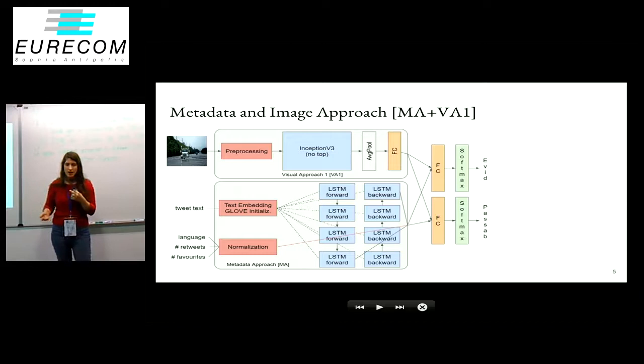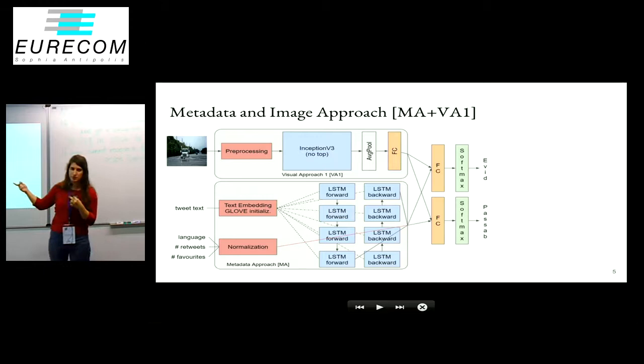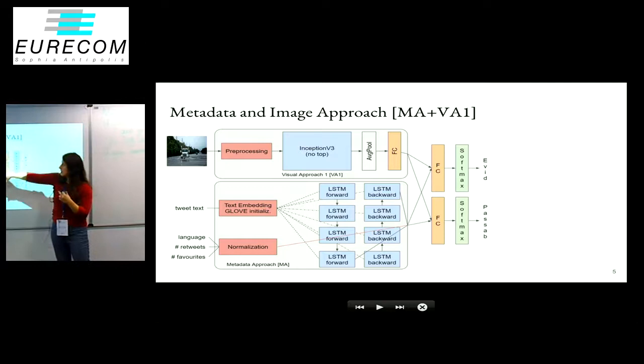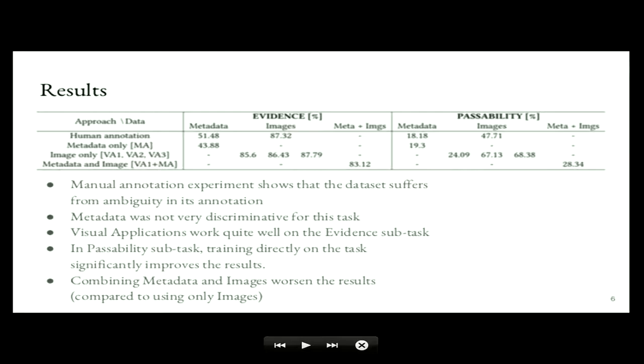Finally, for using the metadata with the visual information, we took the first approach that we used for the metadata together with the first approach for the visual information. And we combined them, we concatenated the features, and then did again the same two fully connected layers and trained both tasks simultaneously.